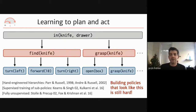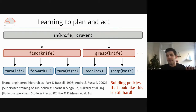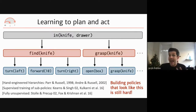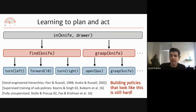Existing methods also require collecting specialized demonstrations or rewards to implement a special-purpose controller for each pre-committed skill. Fully unsupervised methods exist but tend not to do what we want. So building hierarchical policies in practice — even with decades of research — still seems quite hard.